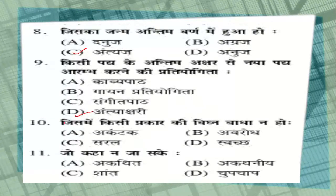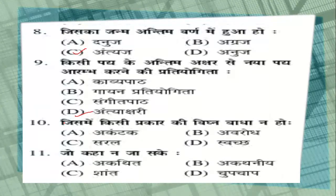Question number 10: जिसमें किसी प्रकार की विघ्न-बाधा न हो — options: अकंटक, अवरोध, सरल, स्वच्छ. The correct answer is अकंटक — sorry, it is pronounced अकंटक. That was a pronunciation mistake on my part — it is अकंटक.